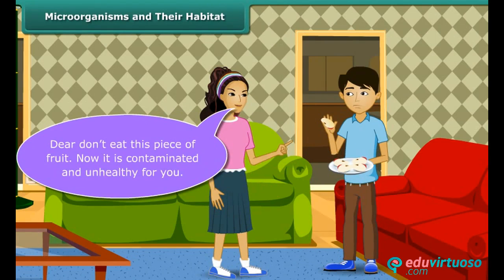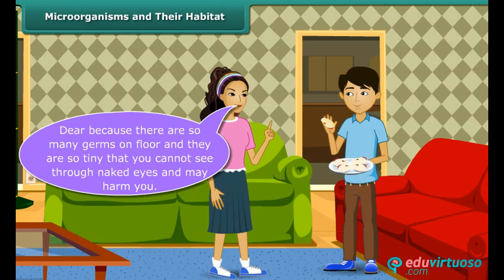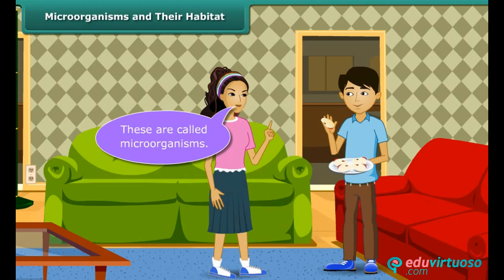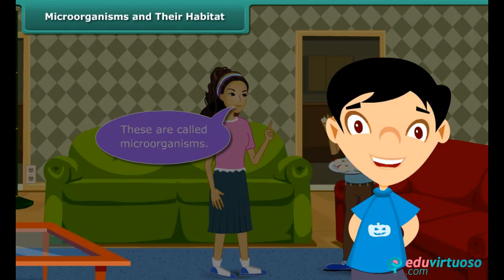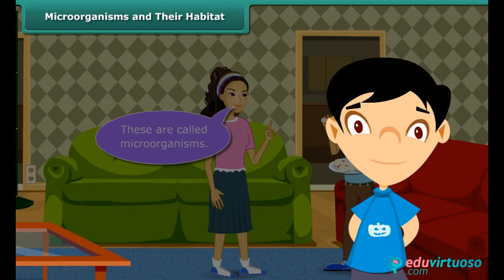Dear, don't eat this piece of fruit — it is contaminated and unhealthy for you. But why? Because there are so many germs on the floor and they are so tiny that you cannot see them through naked eyes, and they may harm you. What are these? These are called microorganisms. You'll be surprised to know that a microorganism can help us in making our food and the same can make us ill too. So let us first know about such microorganisms and their habitat.